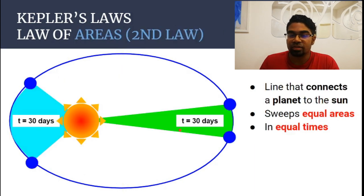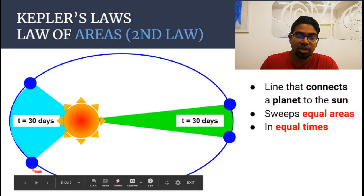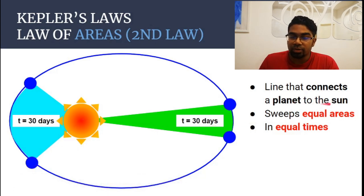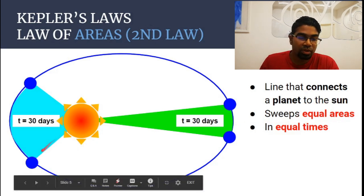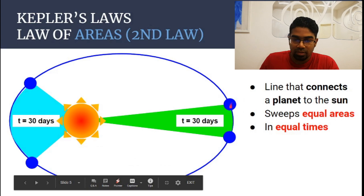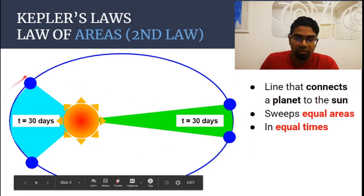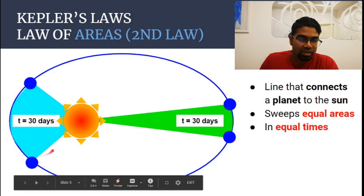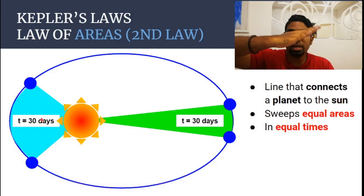The second law is the law of areas. The law of areas stipulates that the line connecting the planet to the sun sweeps equal areas. Assume this blue object is a planet, and this is the line connecting it to the sun. This planet is moving in one direction here, and then the same planet has come all the way to the other side and is moving from one point to another. As the planets move, this line is sweeping area.